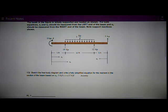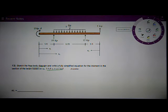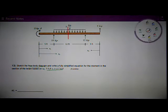So we want to do, for the first part, a free body diagram, which is the key to solving these problems. And then we want to write a fully simplified equation for the moment in the section from x equals 5 to x equals 17, just like it says here. So that means we're going to make a cut somewhere in here, anywhere in this span, in this portion of the span.